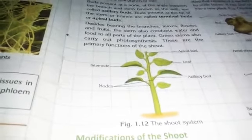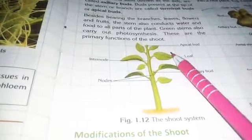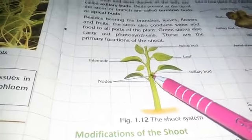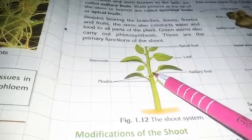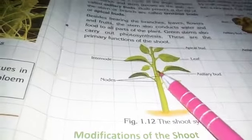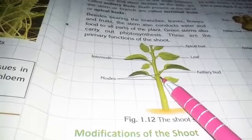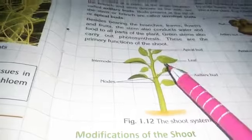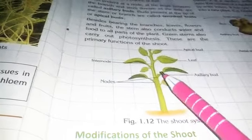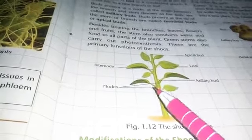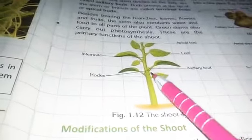A bud is a compact form of shoot — meaning a compact growth that may appear on the stem. Buds are compact growths on the stem which may develop into a leaf, a branch, or a flower.